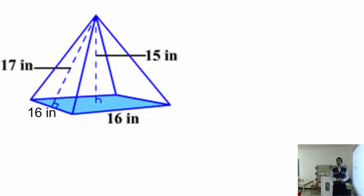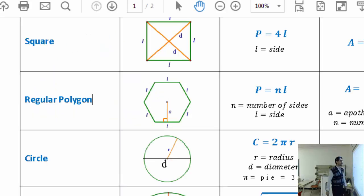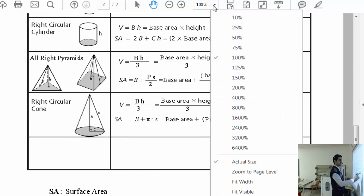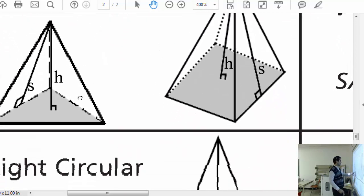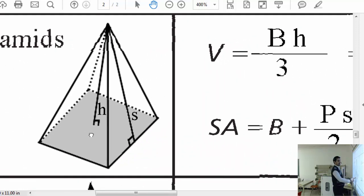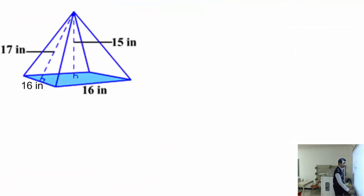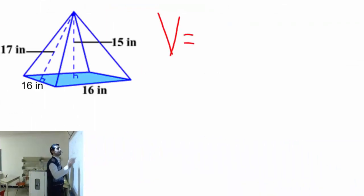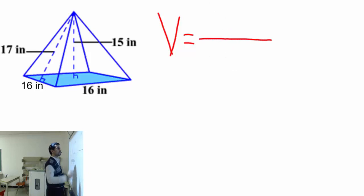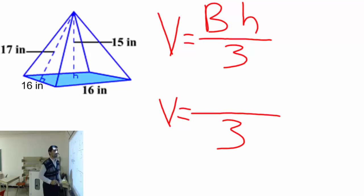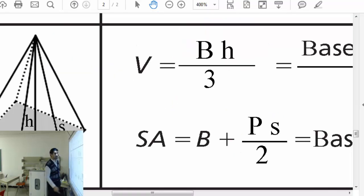Since this is a pyramid, I'm going to write down the volume formula. The volume formula for a pyramid is V = Bh ÷ 3, where B is the base area and h is the height of the pyramid. I'll write that down now.